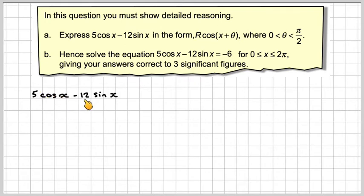We've got 5 cos x minus 12 sin x and we have to first write it in this format. Well, R you get by just doing the square root of 5 squared plus 12 squared, which is actually equal to 13.